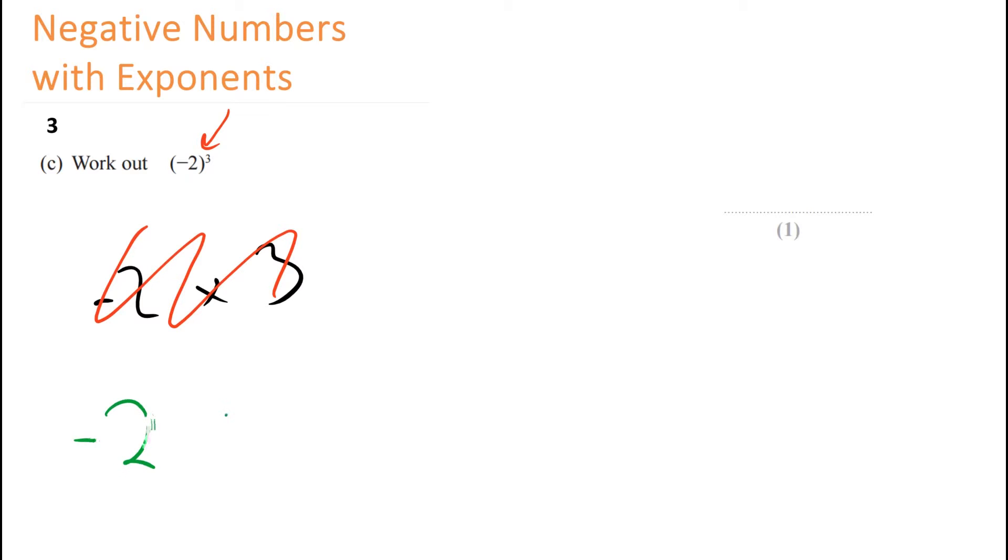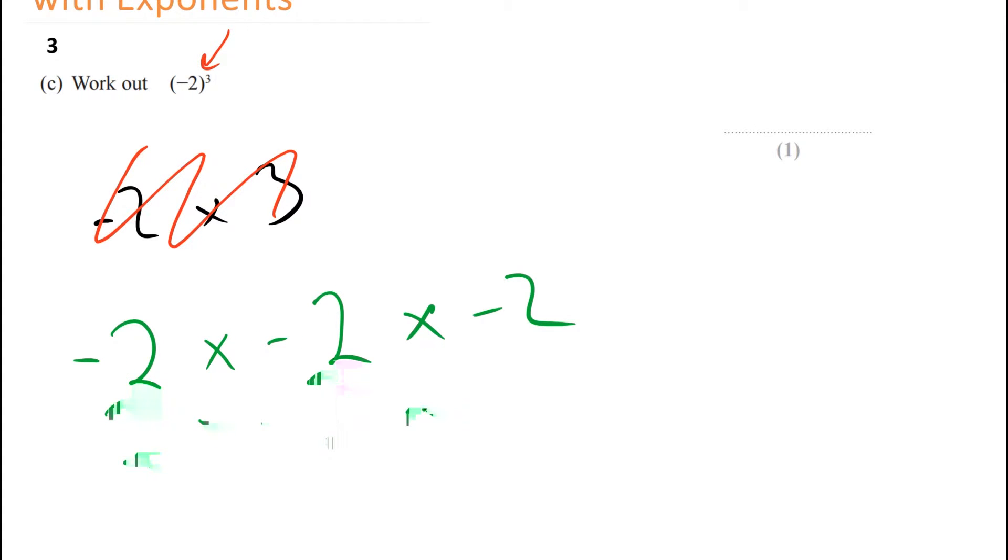It means times by itself, so times by minus 2 three times. So so far once, twice, three times. So you should see the number three times in your calculation. Minus 2 times minus 2 times minus 2.